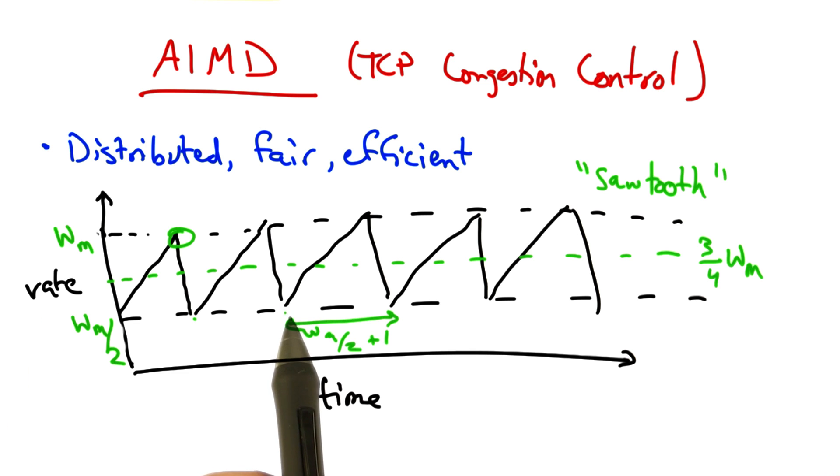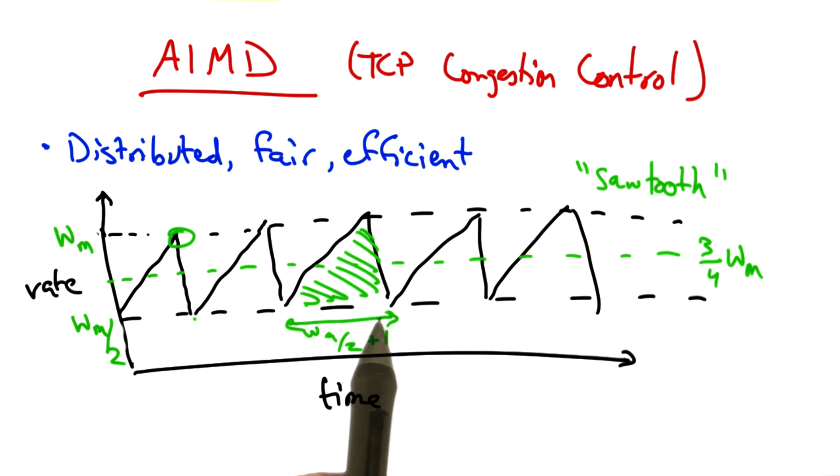You can see that between the lowest sending rate and the highest is WM over 2 plus 1 round trips. Now given that rate, we can compute the number of packets sent for every packet lost is the area of this triangle. So the loss rate is on the order of the square of the maximum window divided by some constant.